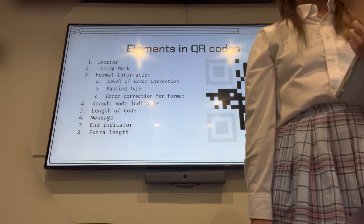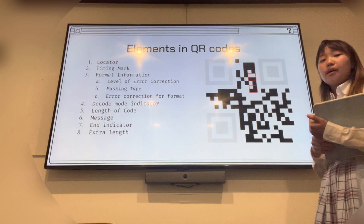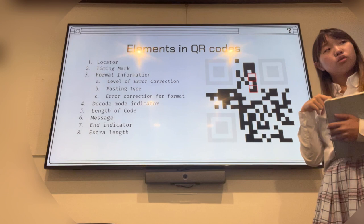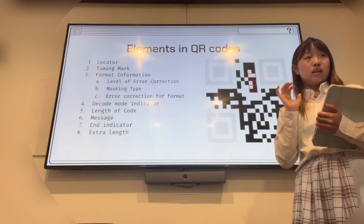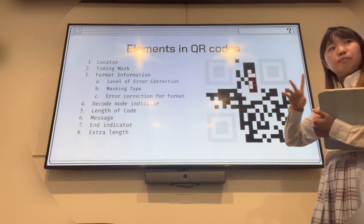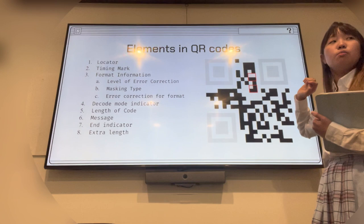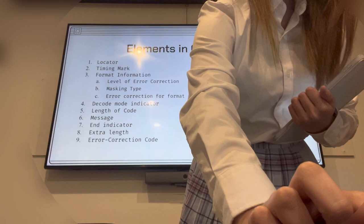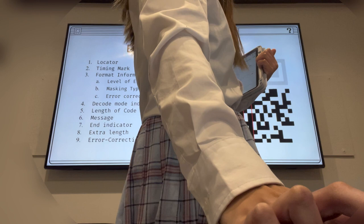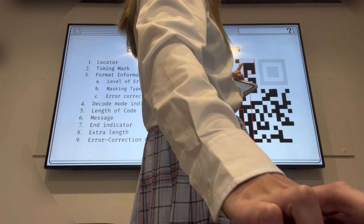Another interesting part is extra length that we have here. This QR code I'm using as an example is version 1 QR code, which contains 16 data codewords and 10 error codes. Here we are already using 15 codewords, but we have one more left. The one more left, QR code generator just puts a random number on it. It doesn't use the random bit. It'll only use the 15 that we actually use.